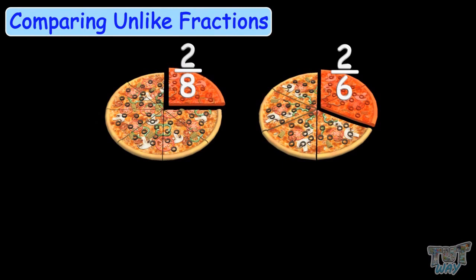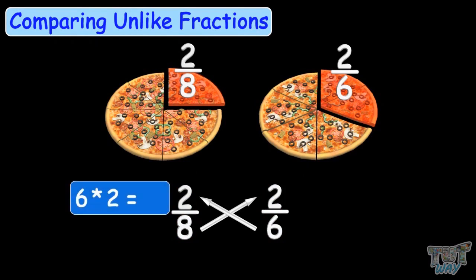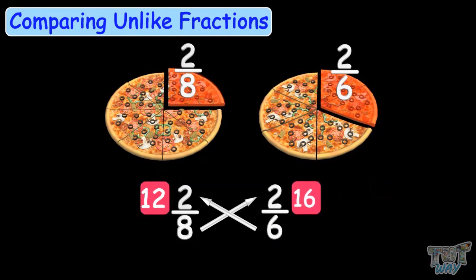Write the two fractions side by side and multiply the denominator of the one with the numerator of the other. Multiply 6 by 2 and you get 12 on this side. Multiply 8 by 2 and you get 16 on this side, so we get a bigger number on this side. So 2 by 6 is bigger than 2 by 8.